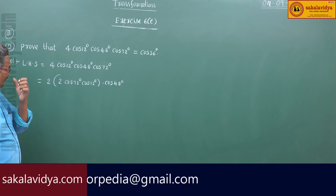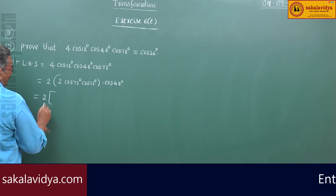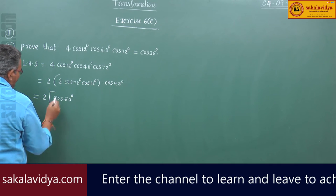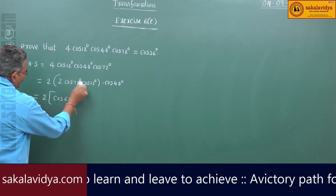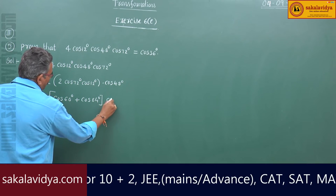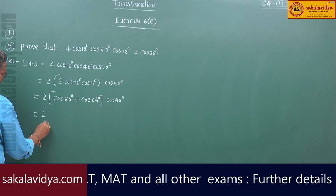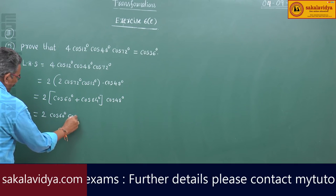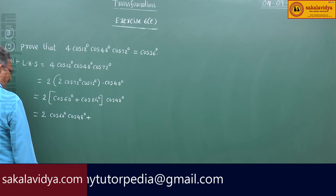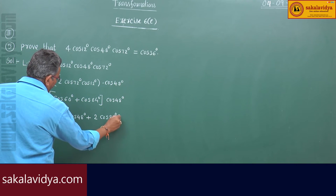So that we can simplify. Now, this is 2 times 2·cosA·cosB, which gives cos of (A-B) plus cos of (A+B). We can write 2·cos60·cos48 plus 2·cos84 degrees·cos48 degrees.